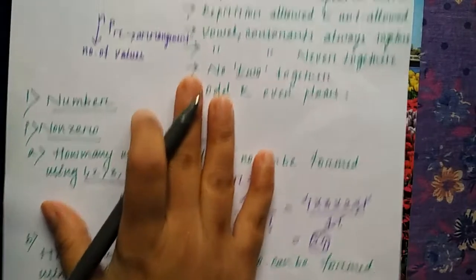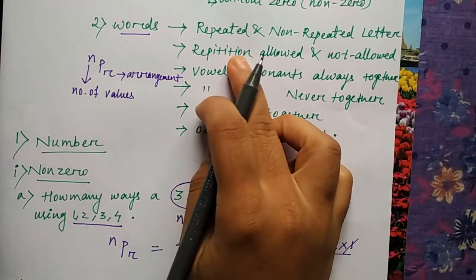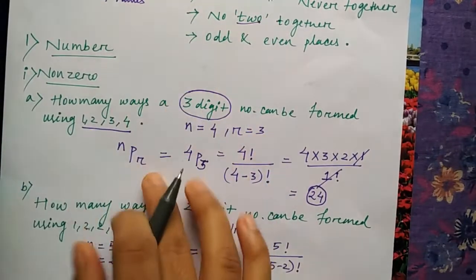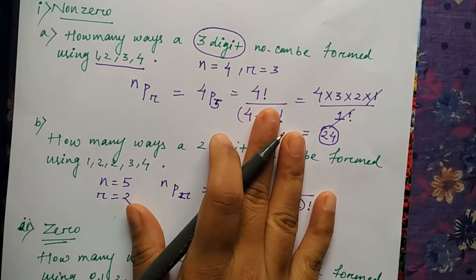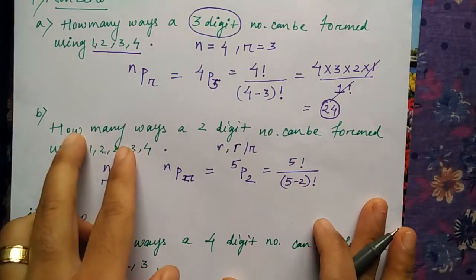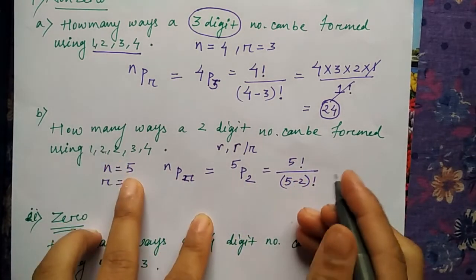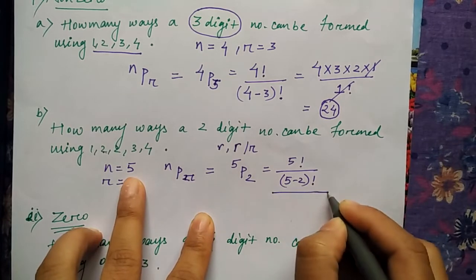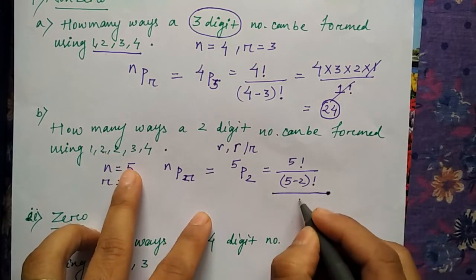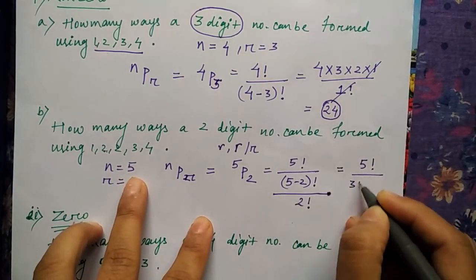So in such cases, it comes under this category where repetition is there, or repeated values are there. This is for numbers, but the same thing is applied in either case. So what you can do is whenever repetition is there, you have to divide by the number of repeated values—how many times it is repeated. Two times, so it will be divided by 2 factorial. So the answer will be 5 factorial divided by (5 minus 2), that's 3 factorial, into 2 factorial.